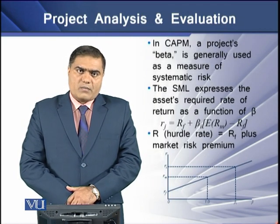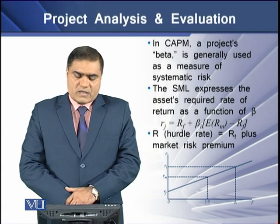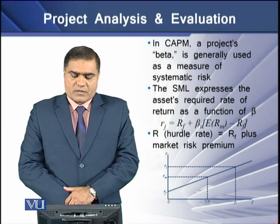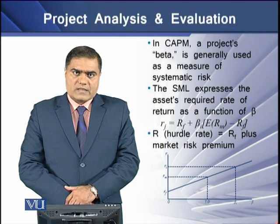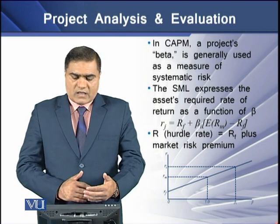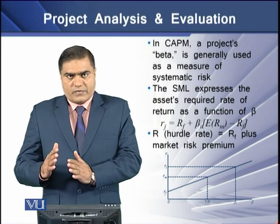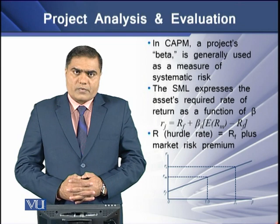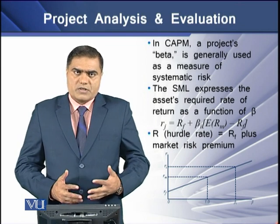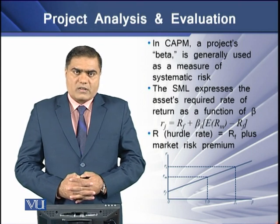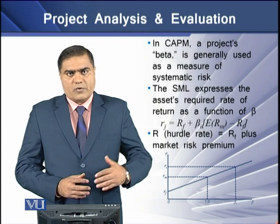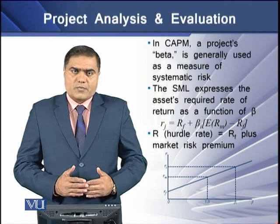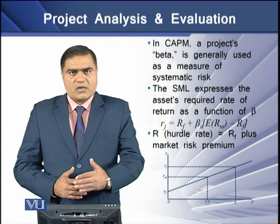For that purpose we have a market-based risk measure model — the CAPM, or capital asset pricing model. Through CAPM we determine a project beta, and that beta is generally used as a measure of project riskiness, specifically a measure of systematic risk which is exposed to the project's NPV or IRR. For this purpose we have a model in terms of the SML, or security market line. The security market line develops a relationship between the project's required rate of return and the project's beta.